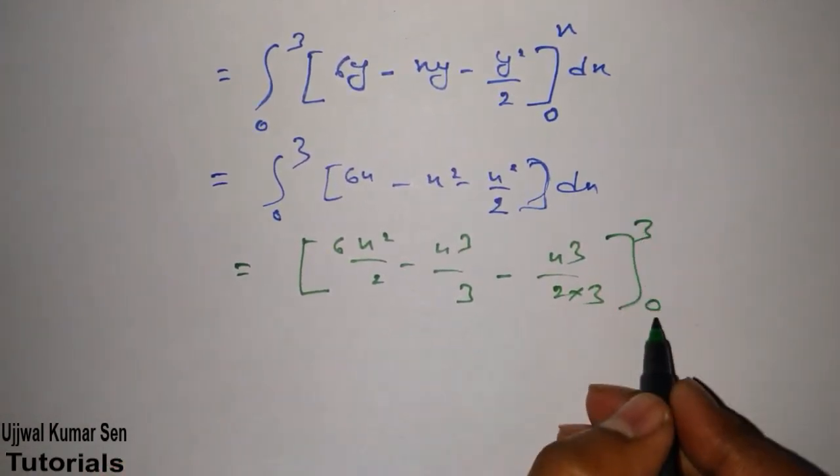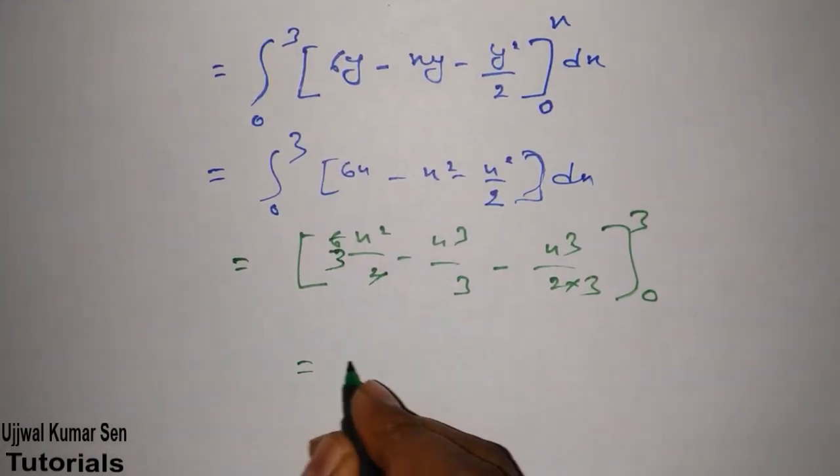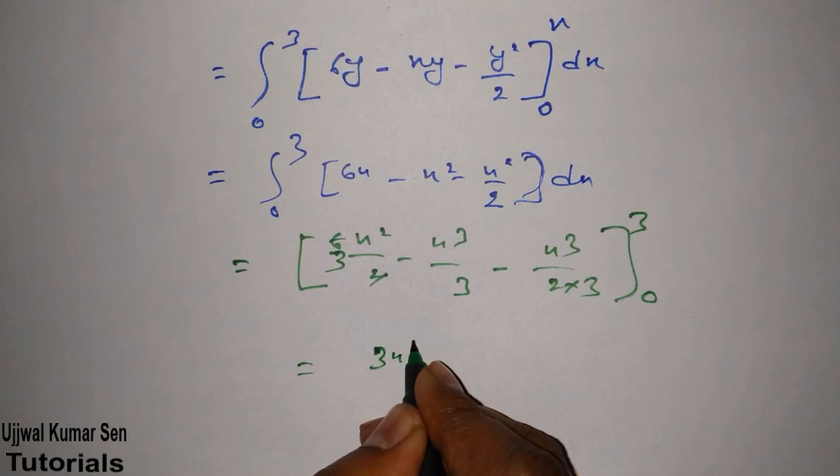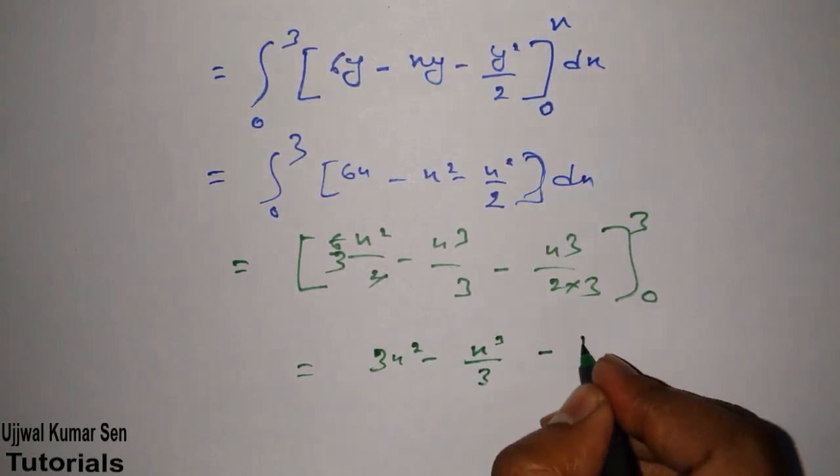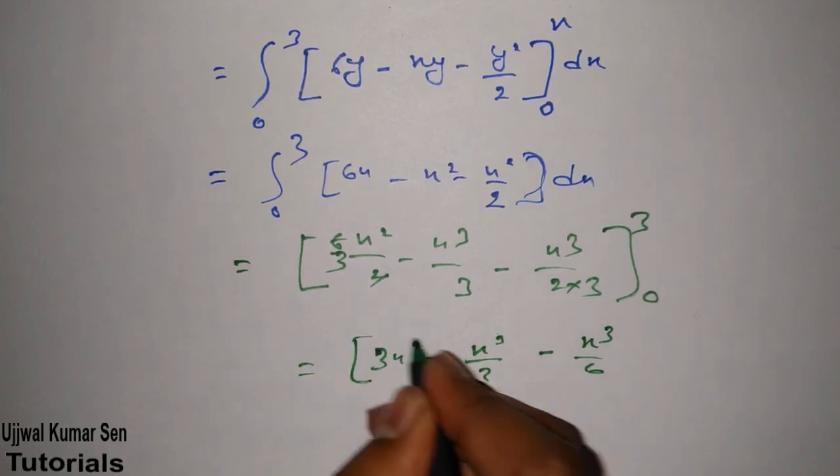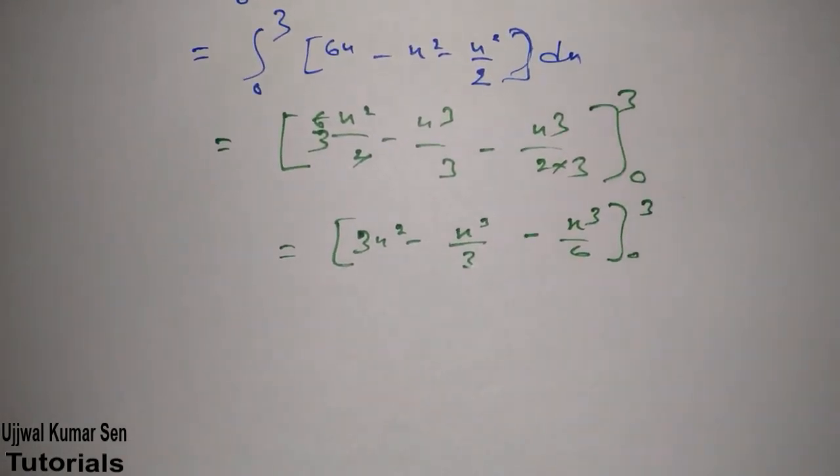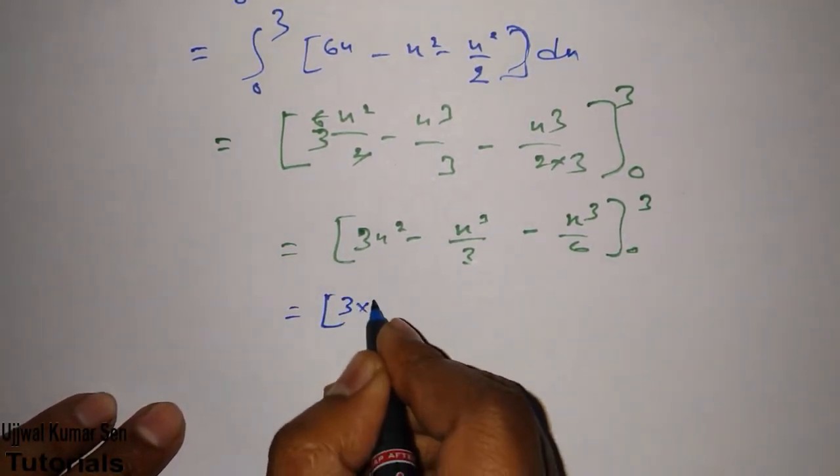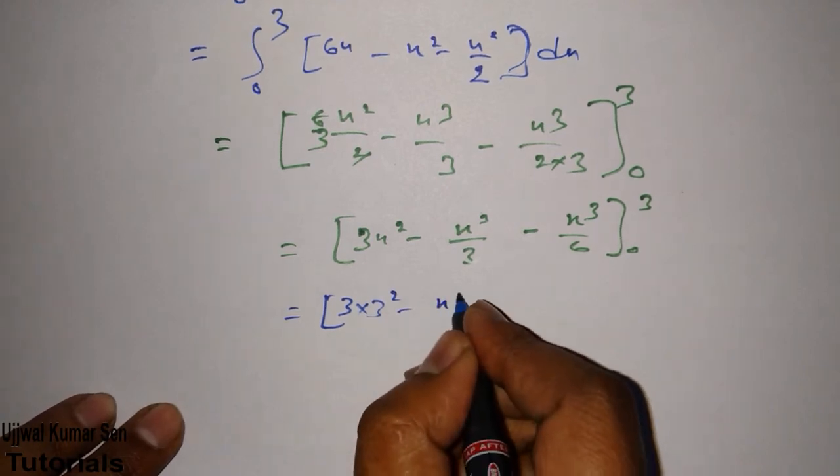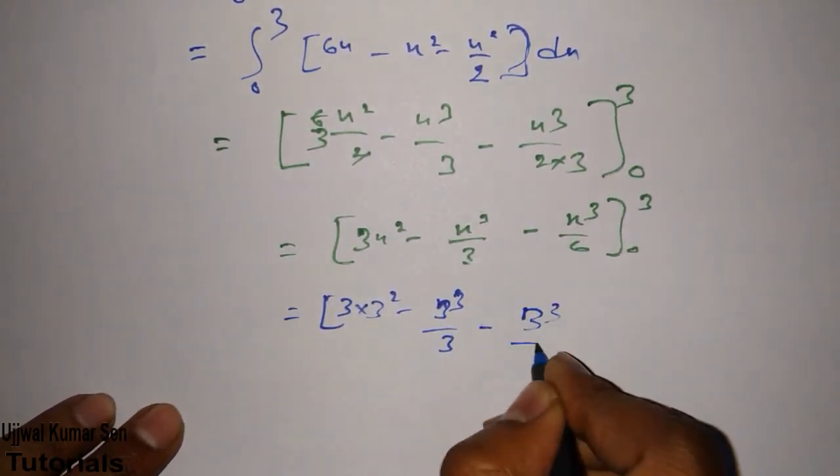So 2, 3 and x, 3x square minus x cube by 3 minus x cube by 6. So we got limit 0 to 3. Now we have to put these values: 3, 3 square, x, sorry 3 cube by 3, 3 cube by 6 minus...